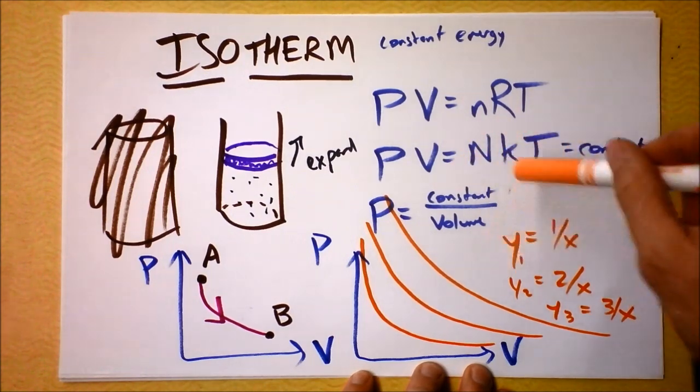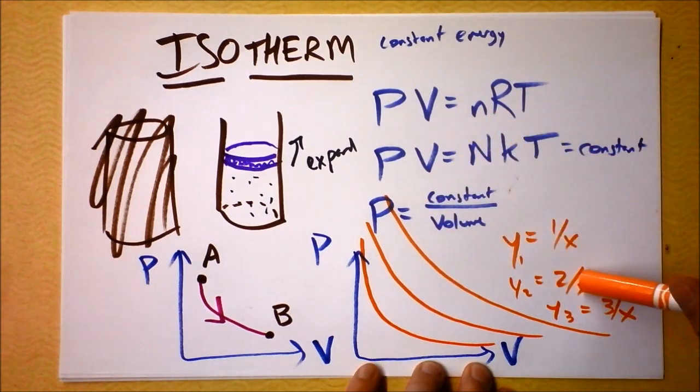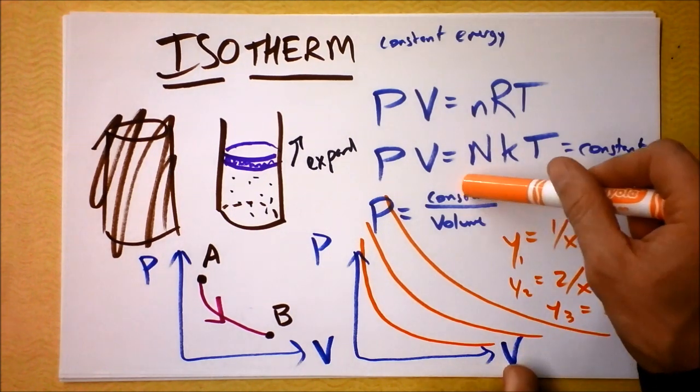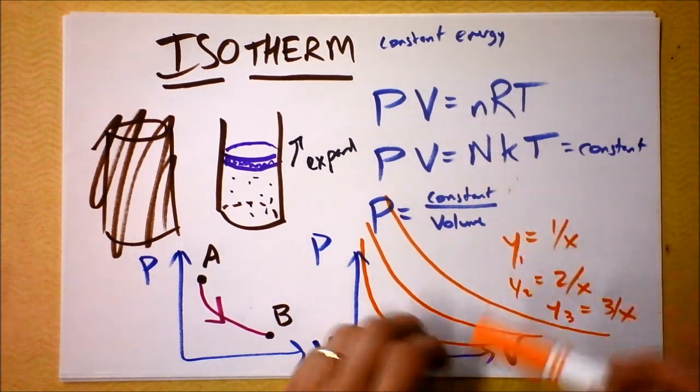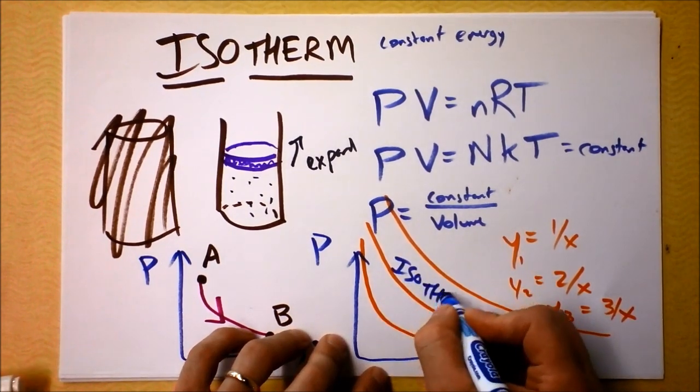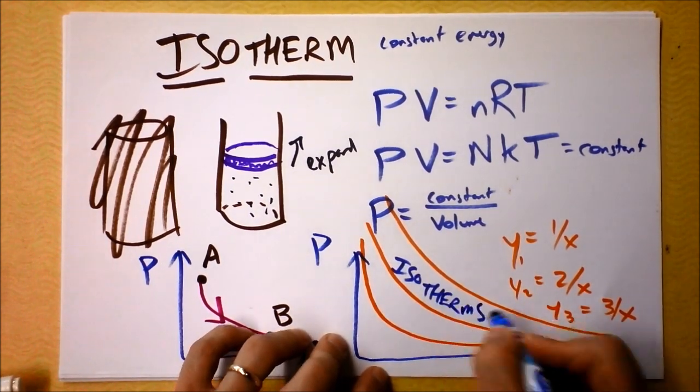Those are different temperatures, because the constant in the numerator here is the temperature, well, times n and k, but it's sort of the energy in the system. And then we're dividing it by our x variable, which is the volume. So, here we have constant over volume. And these are called isotherms, meaning that they're the same temperature.